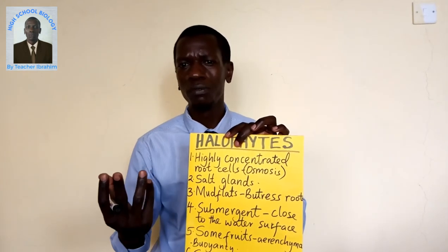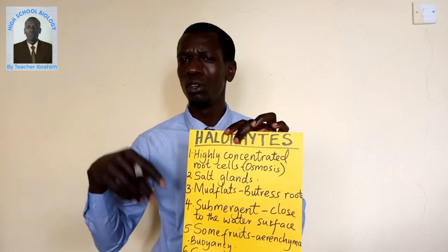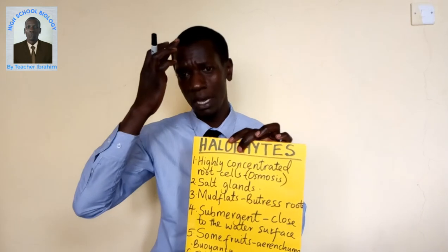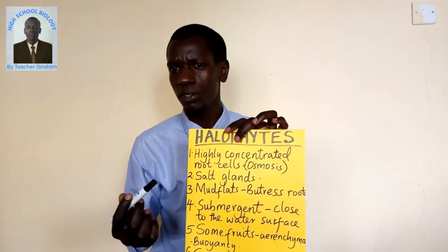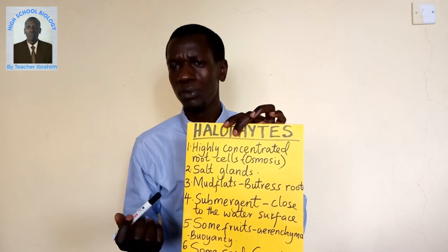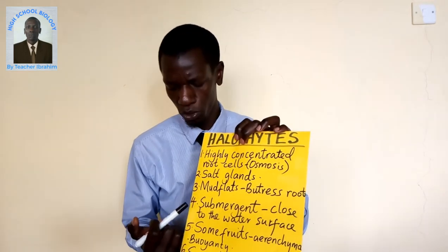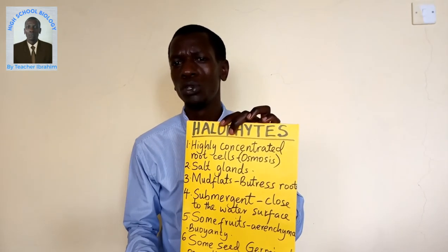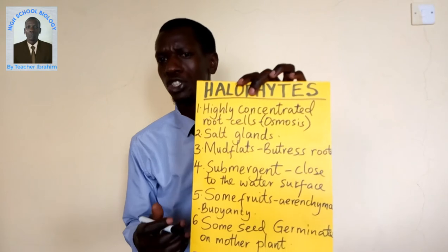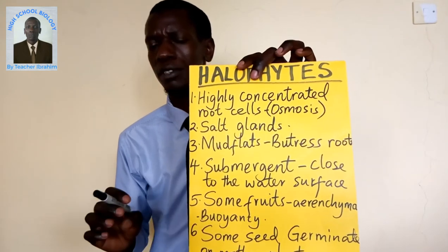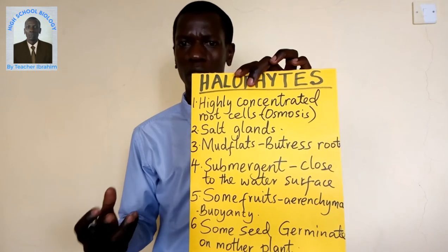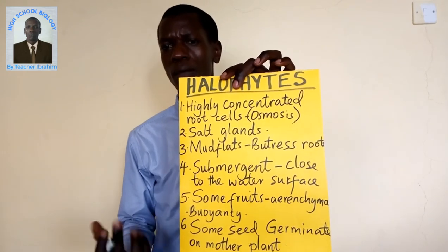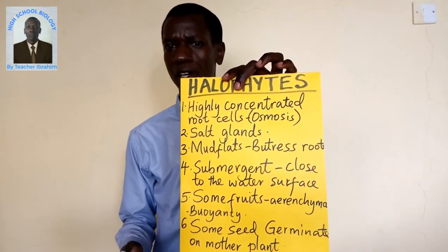Number four: most plants growing submerged in water may grow close to the surface to enable them to absorb light for photosynthesis. Number five: some produce fruits which have aerenchyma tissues for buoyancy — particularly those that grow in the marine ecosystem.